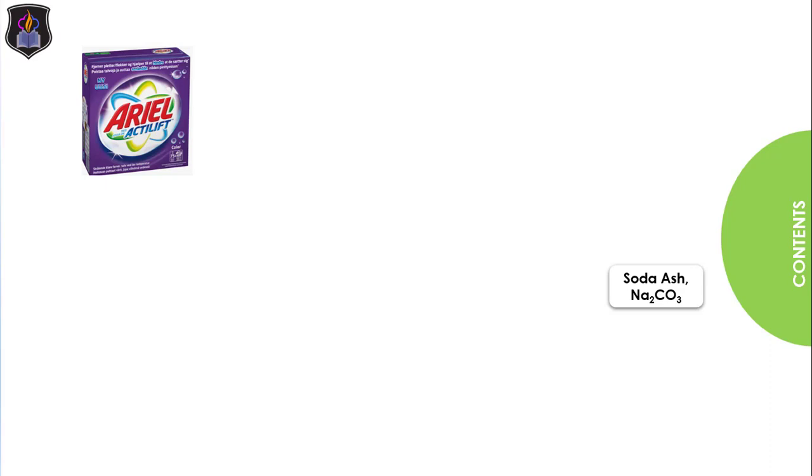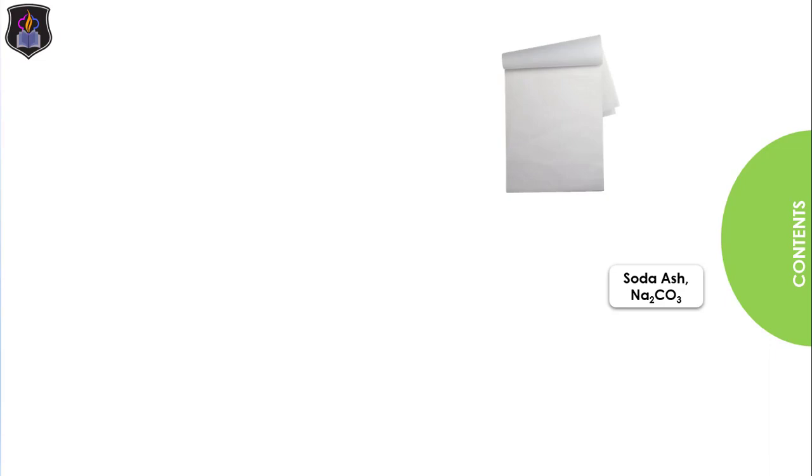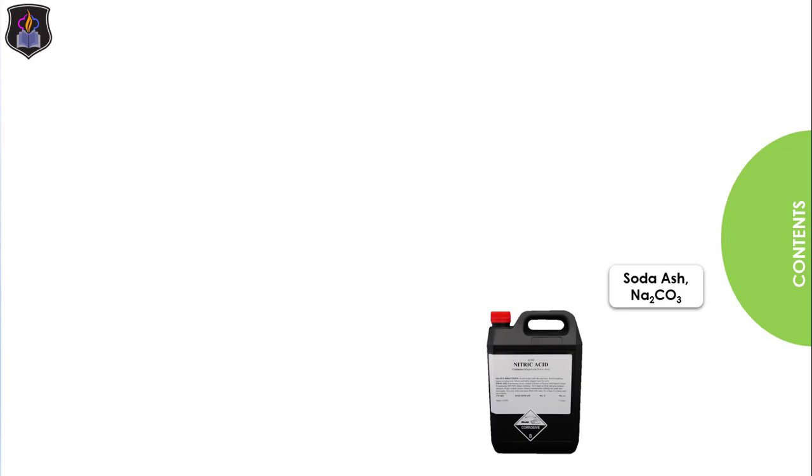Have you ever wondered what is used in making your glassware at home and in the laboratory? Sodium trioxocarbonate (IV), commonly known as soda ash, is an important heavy chemical used in the manufacture of glass and as a water softener in soaps and detergents. It is also used in the manufacture of borax and paper. In the laboratory, it is used for standardizing acids due to its non-deliquescent nature.